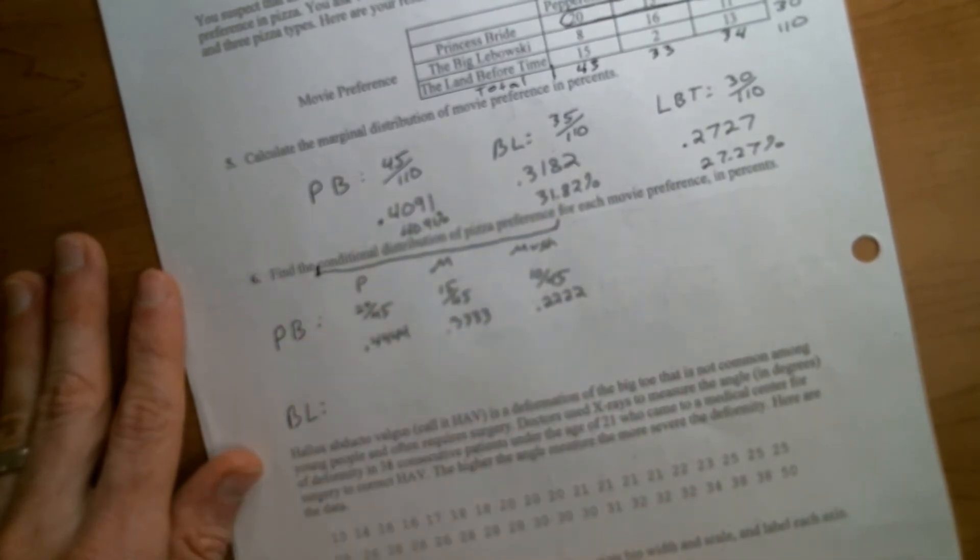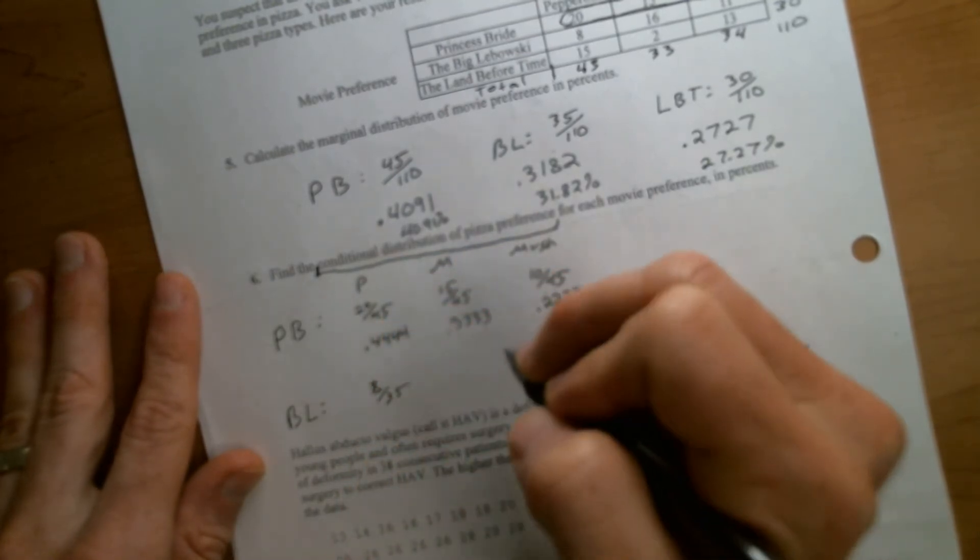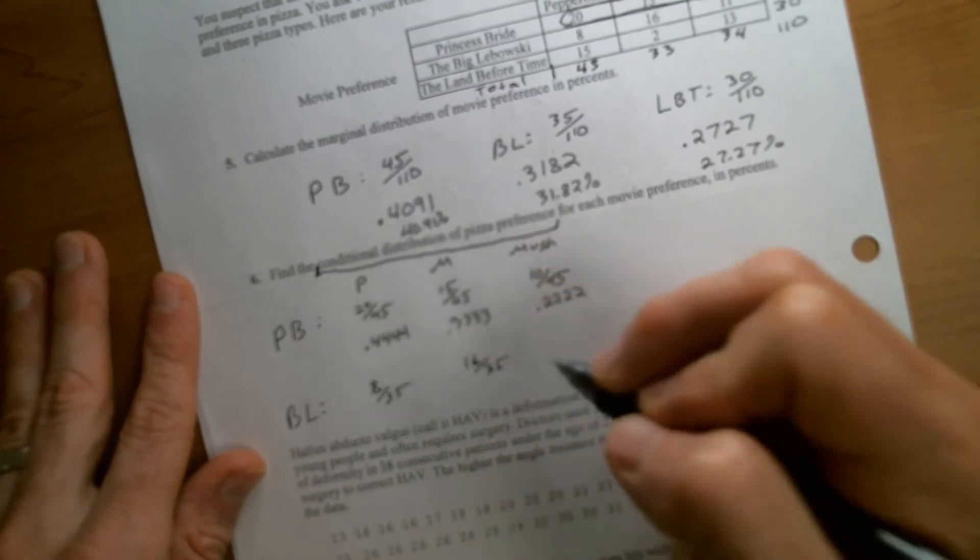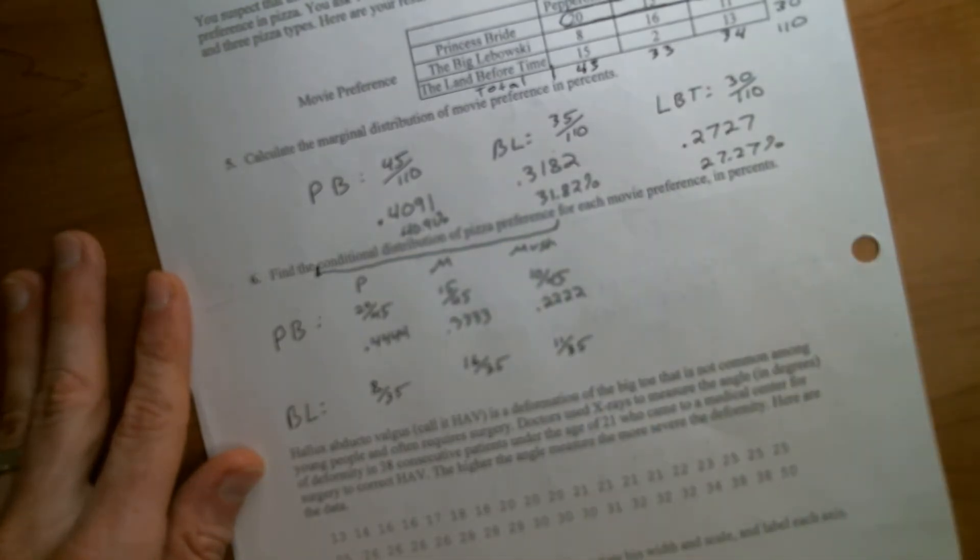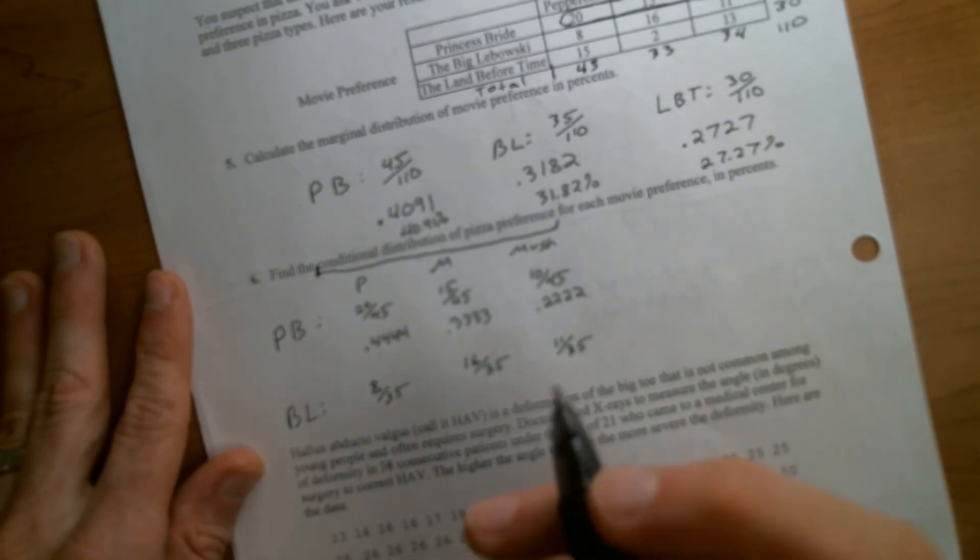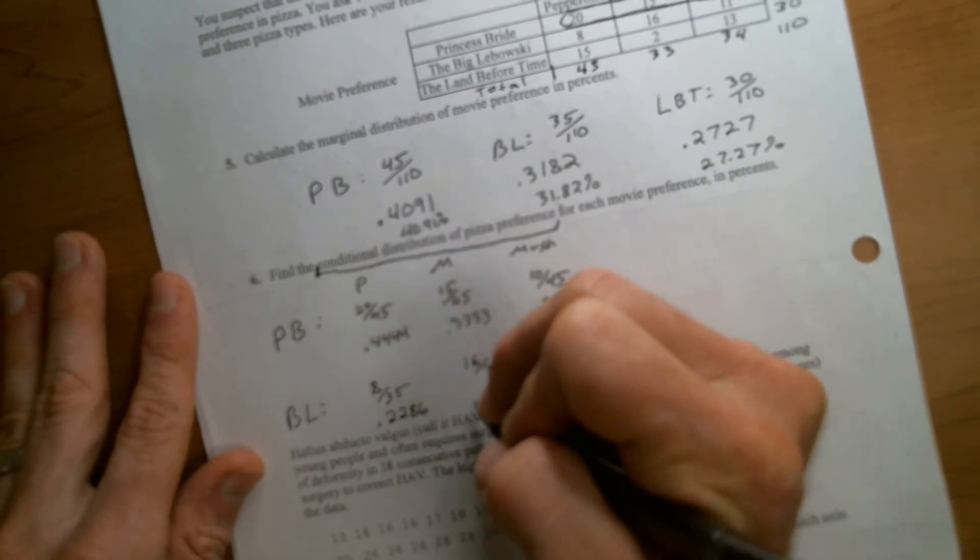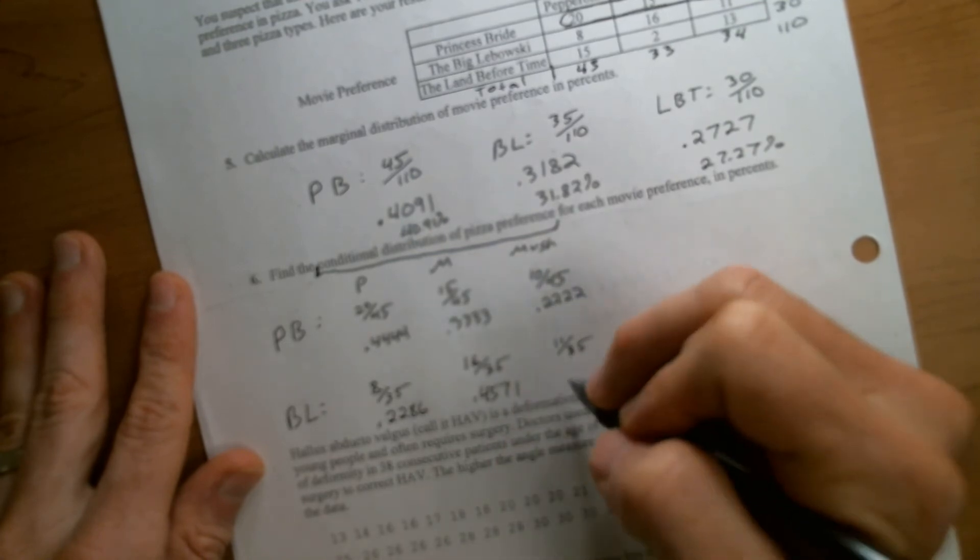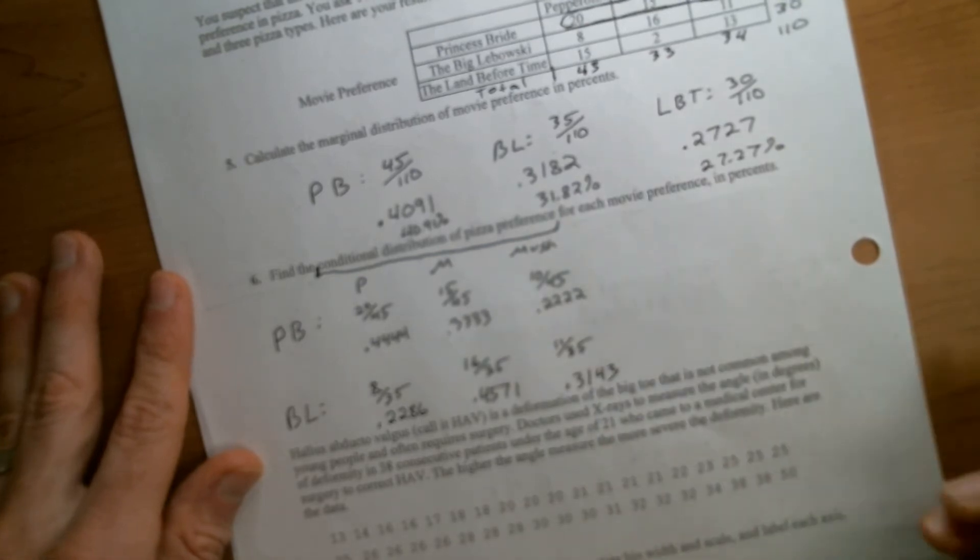And then we would just repeat the process. So for Big Lebowski, we would do the same thing. Only now it would be 8 out of 35. It would be 16 out of 35. It would be 11 out of 35. And then we would go through. And again, just make sure you're actually giving me those as percents. Don't just leave them as the fraction if that's what the problem asks for. So this one would be 0.2286. This one would be 4571. And this one would be 0.3143.